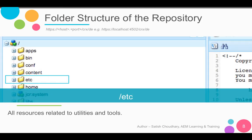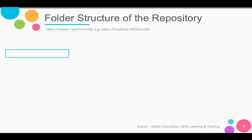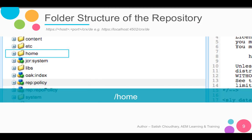Then we have the etc folder. It contains all the resources related to your utilities and tools, which are stored inside the etc folder. The home folder contains all the information related to your users and groups defined in AEM. Any information related to AEM users and groups is stored under the slash home folder.